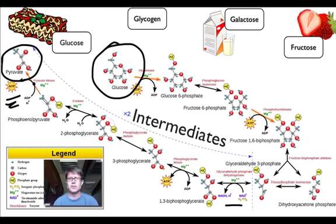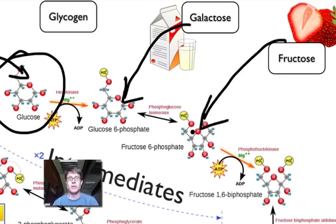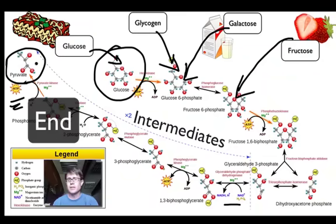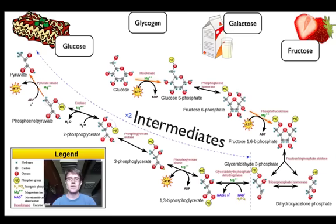Glycolysis is ubiquitous — used by almost all living things. Simple sugars like glucose enter right at the start. Galactose, found in dairy products, jumps into glucose-6-phosphate. Fructose can jump in farther down the pathway. Glycogen, a storage molecule made of many sugar units, can jump in at another point. You don't need to memorize all the intermediates — just know where we start and end, and that it's a systematic pathway you can enter at different points.